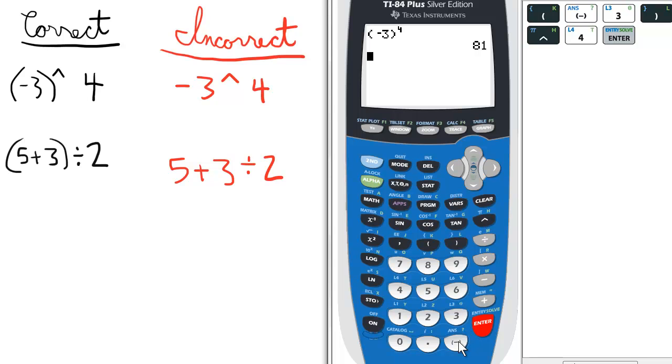This is how to do it incorrectly. Negative 3 raised to the 4th. The calculator believes you want the opposite of 3 to the 4th, so it gives you the opposite of 81, which is negative 81.